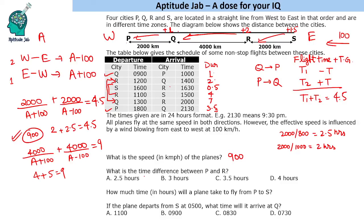The time difference between P and R is 1 plus 2 equals 3 hours. Next question: how long will a plane take to fly from P to S? The distance is 8000 km and the speed going west to east is 800 km/h, so it takes 10 hours. Note this asks for actual flight time, not adjusted for time zones.